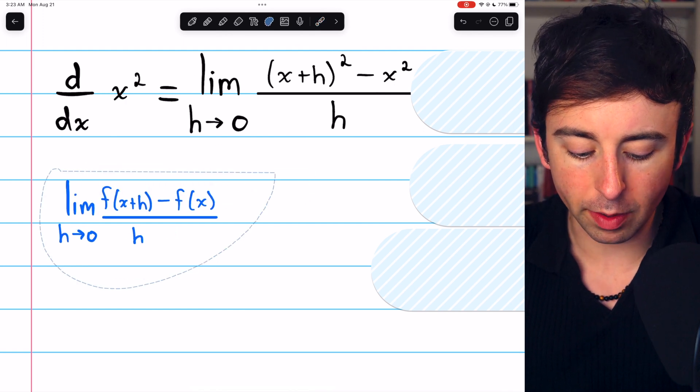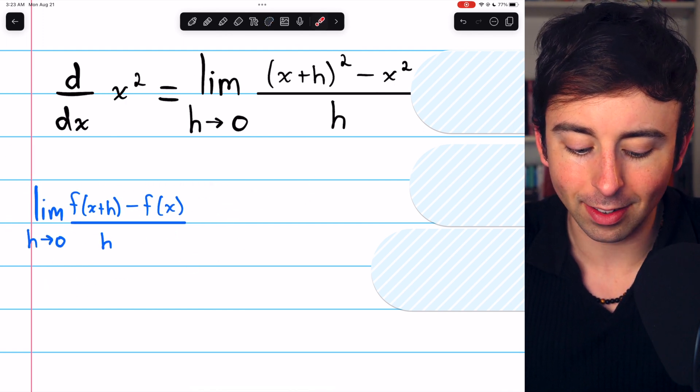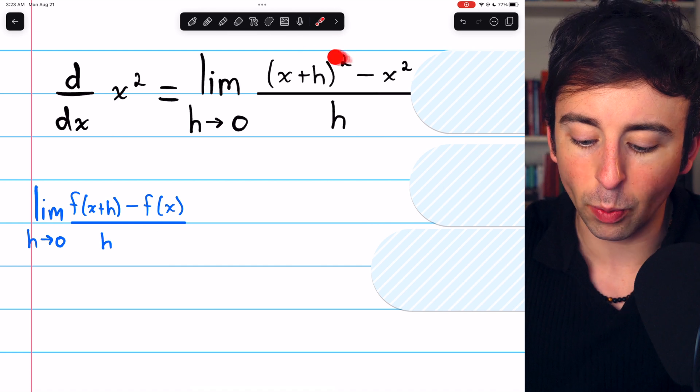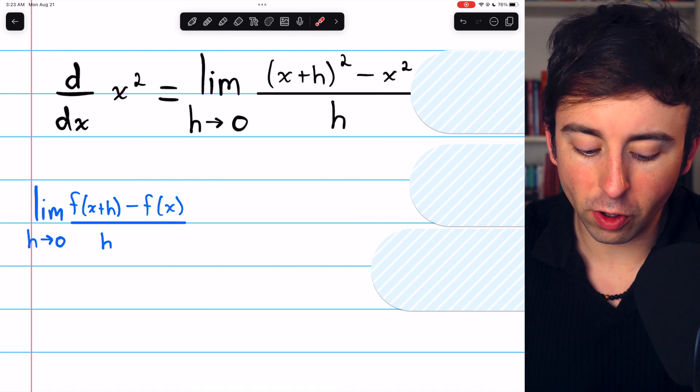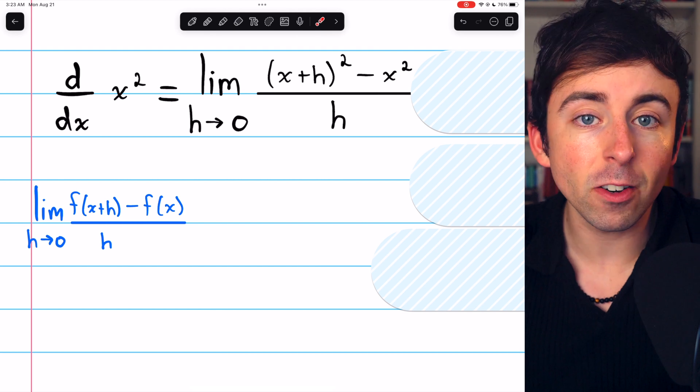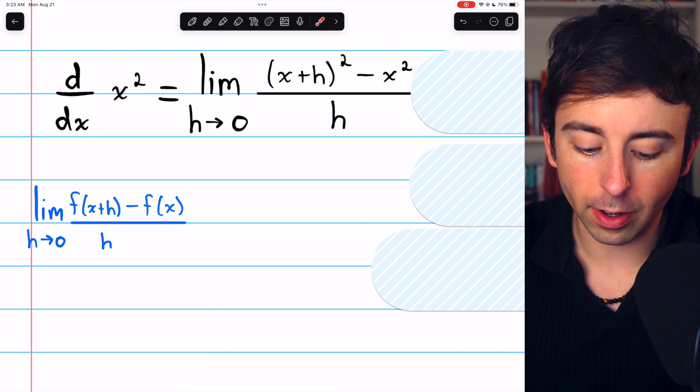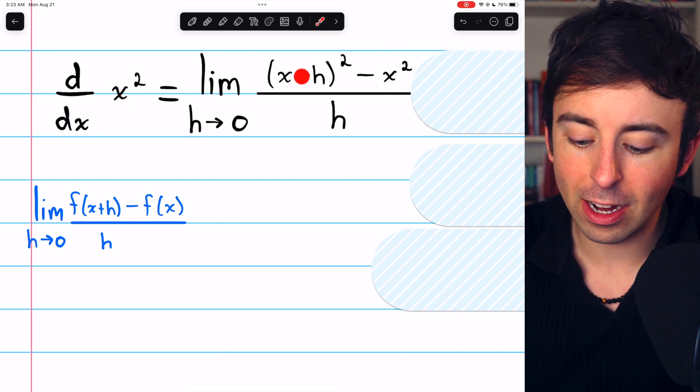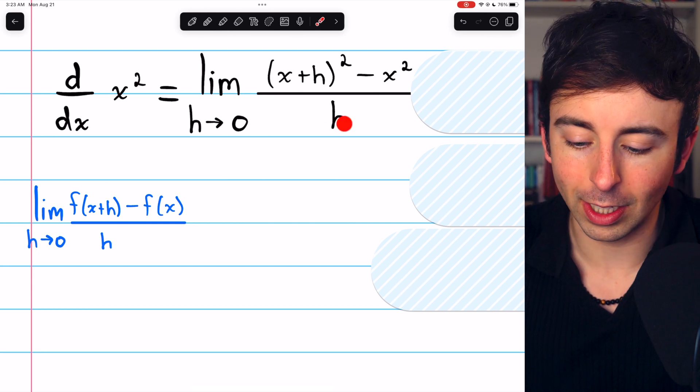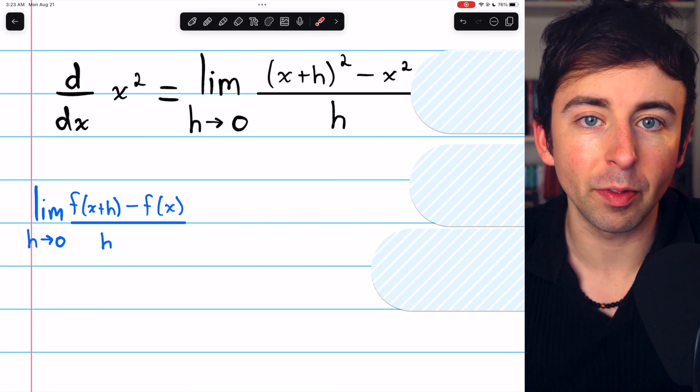The limit definition of the derivative, if you don't recall, is this, and that's what we see here. In the numerator, we have the function evaluated at x plus h. The function is x squared, so that's why we have x plus h squared. And similarly, you can see how the rest of the definition applies.